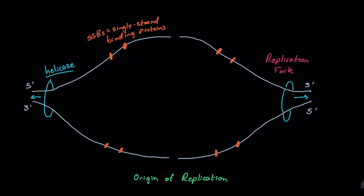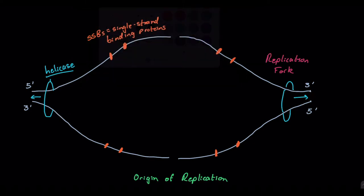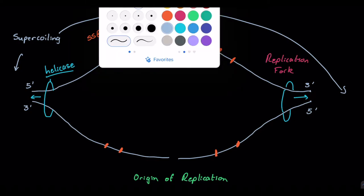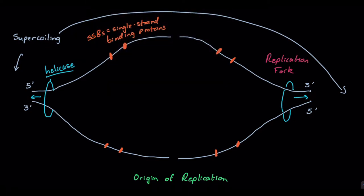Now if we move on we also have another problem to deal with. Upstream of these helicases we're going to get a problem that is termed supercoiling, where we get some tension upstream of these helicases. And that supercoiling will be fixed by a class of enzymes that we call topoisomerases.